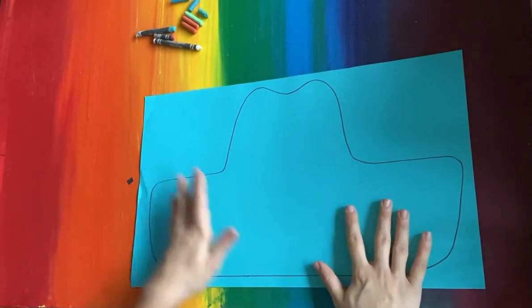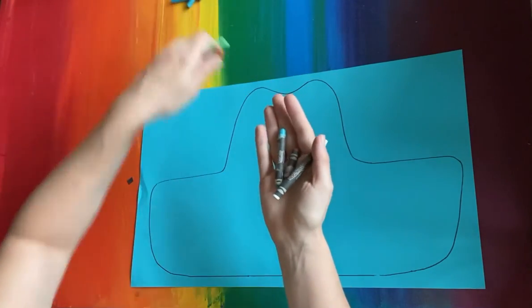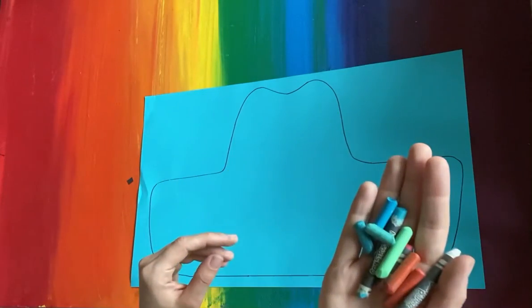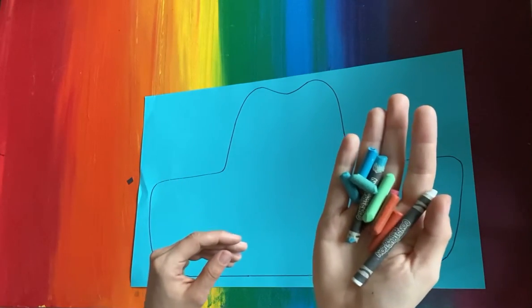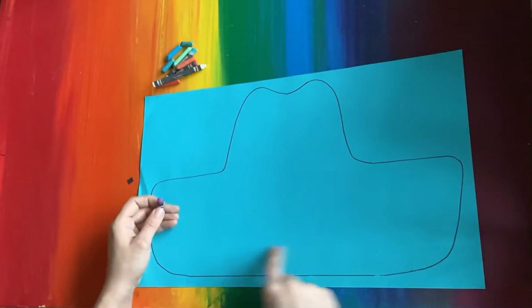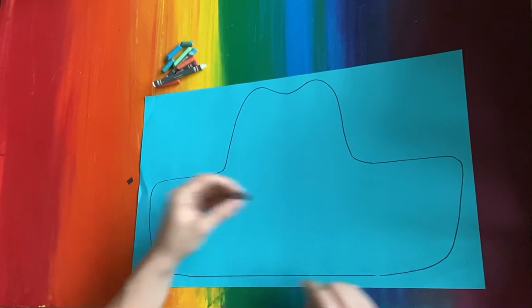To color our construction paper, we're gonna be using these magical construction paper crayons. Now some of them might be broken - is that okay? Definitely, they still work! And you are going to be showing me all different kinds of lines.